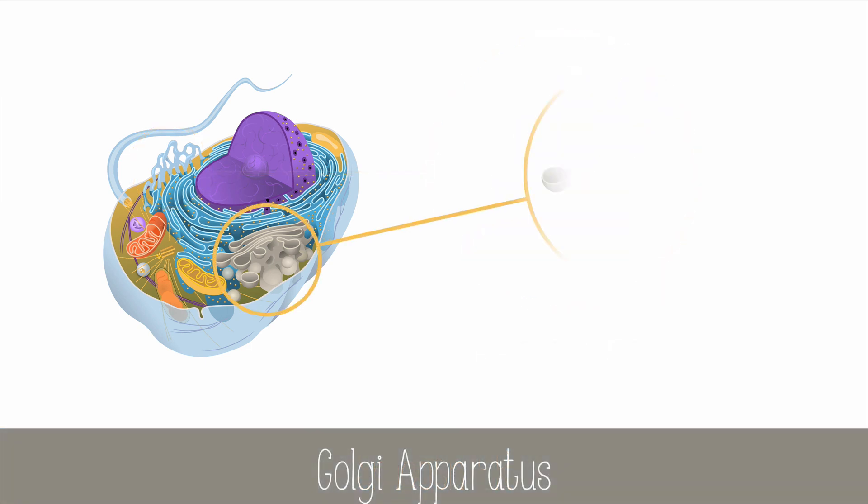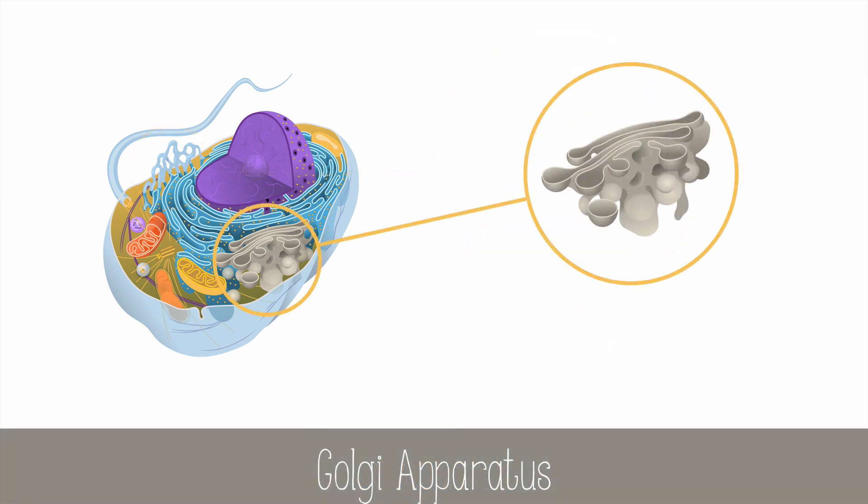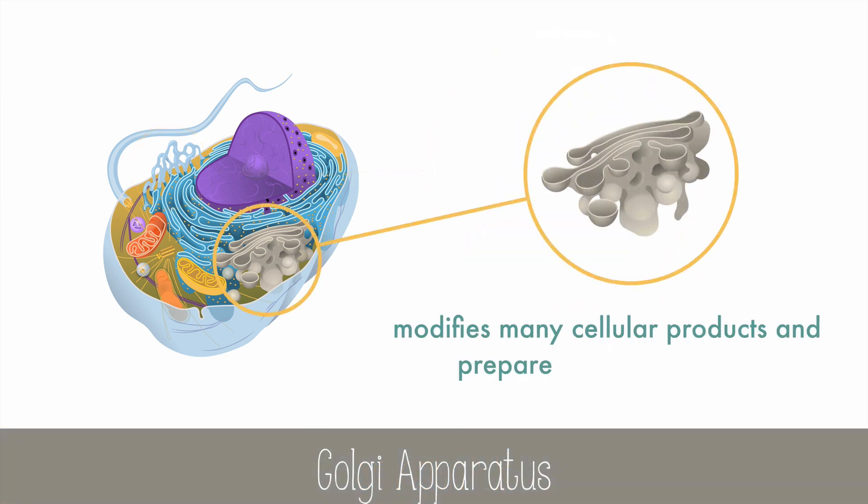The Golgi apparatus, which is also known as the Golgi body, modifies many cellular products that it receives from the endoplasmic reticulum, and it prepares them for export to other regions of the cell, or out of the cell entirely. You can tell the Golgi apparatus from the ER because it doesn't have ribosomes on it, and it's further away from the nucleus.